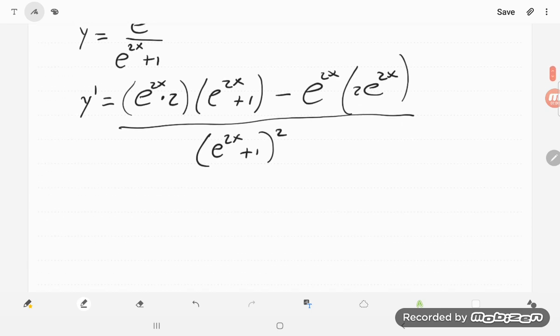So there's our derivative. We can simplify it a bit. It actually simplifies quite a bit, because I've got a 2e to the 2x in both parts of the numerator there. So I'll write 2e to the 2x,